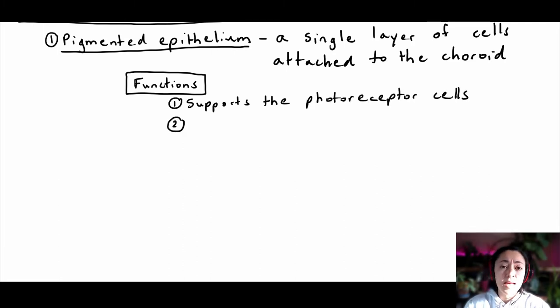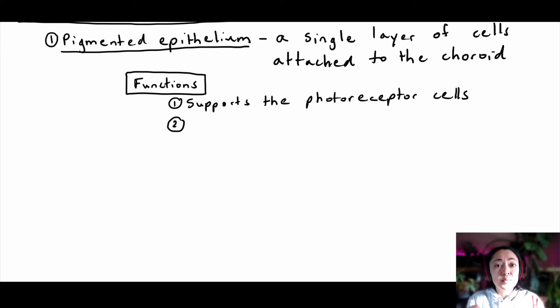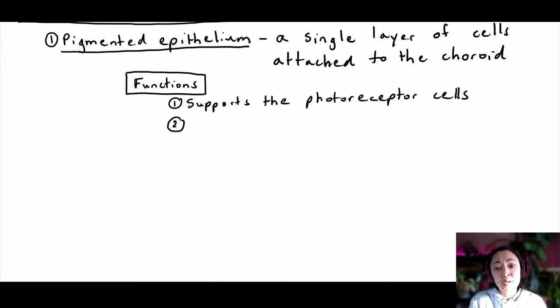The second major function of the pigmented epithelium is to prevent light from scattering within the eye. It does this by absorbing any light that was not absorbed by the photoreceptor cells.